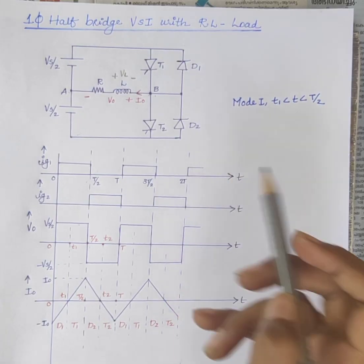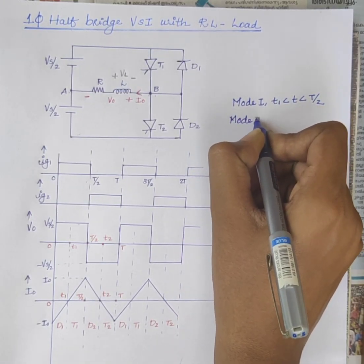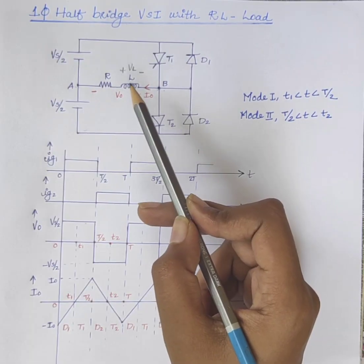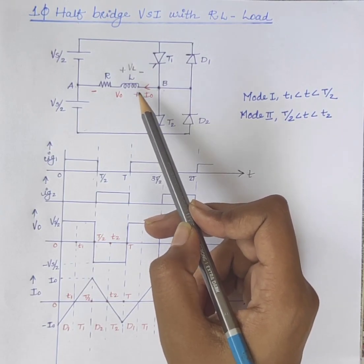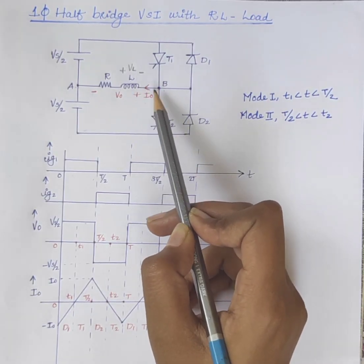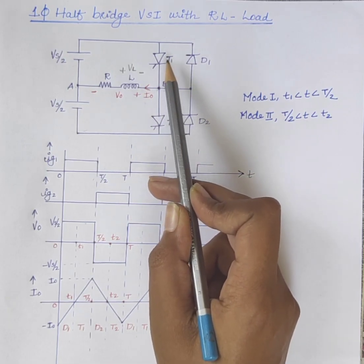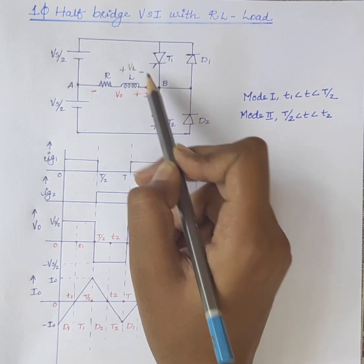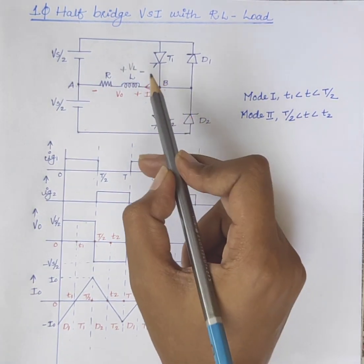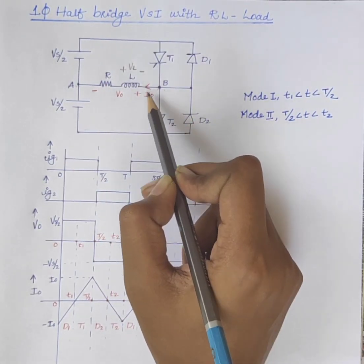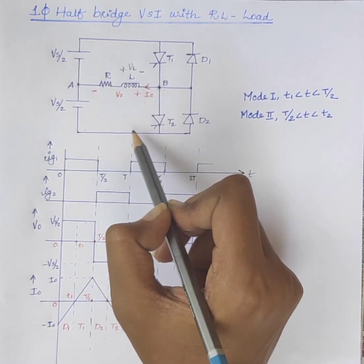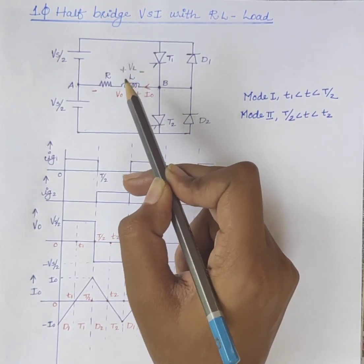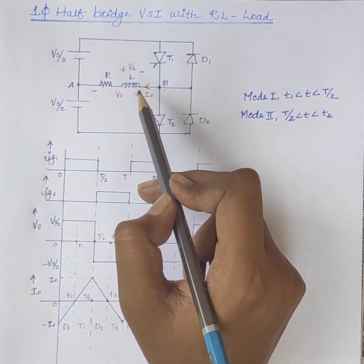Next we discuss Mode 2, the interval T/2 to T2. Since the inductor does not allow sudden change in current, the load current direction will be maintained even after thyristor T1 is turned off. Due to the self-induced voltage VL in the load, diode D2 becomes forward biased and the load current I0 flows through the path load → Vs → diode D2 → back to load. During this interval, the energy stored in the load is fed back to the lower half of the source.